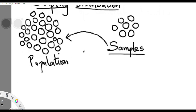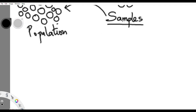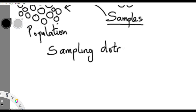Now let's go into the topic proper. When you're working with a population, you can get samples from the population and then judge for the whole population. There is a relationship between your samples and your population, and that relationship is what we want to explore under sampling distribution.